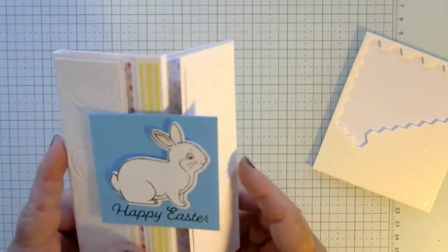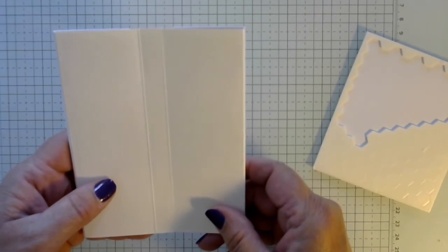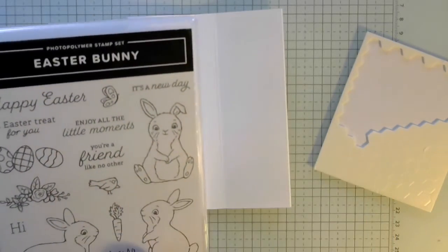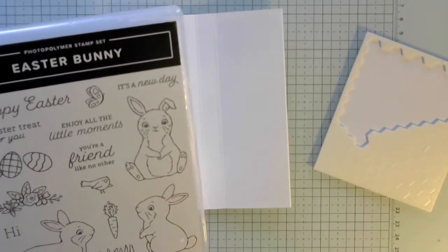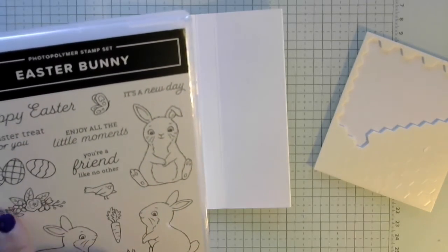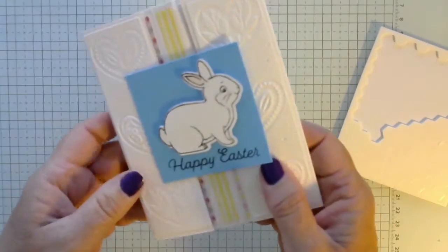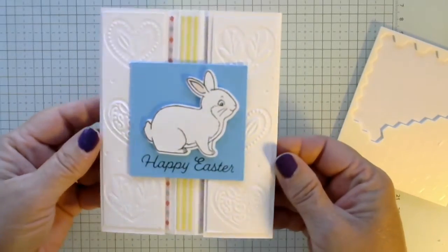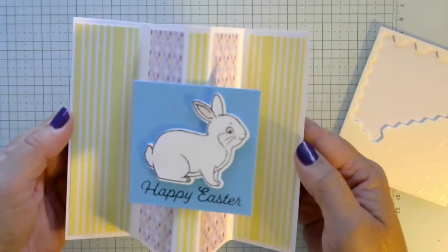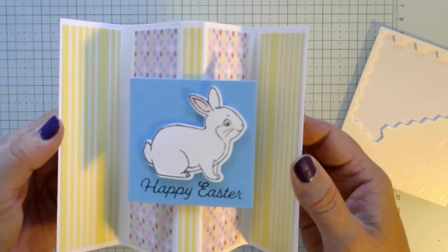And then if you wanted to add any more greetings, you could add them on the back. Enjoy the little moments. You're a friend like no other. An Easter treat for you. We could put some Easter eggs. You know, you could get creative on the back if you wanted. I'm just going to leave this one plain because it's kind of just a happy little Easter card. And then you see when it stands up, somebody can set it on their counter or whatever and cheer up their day.